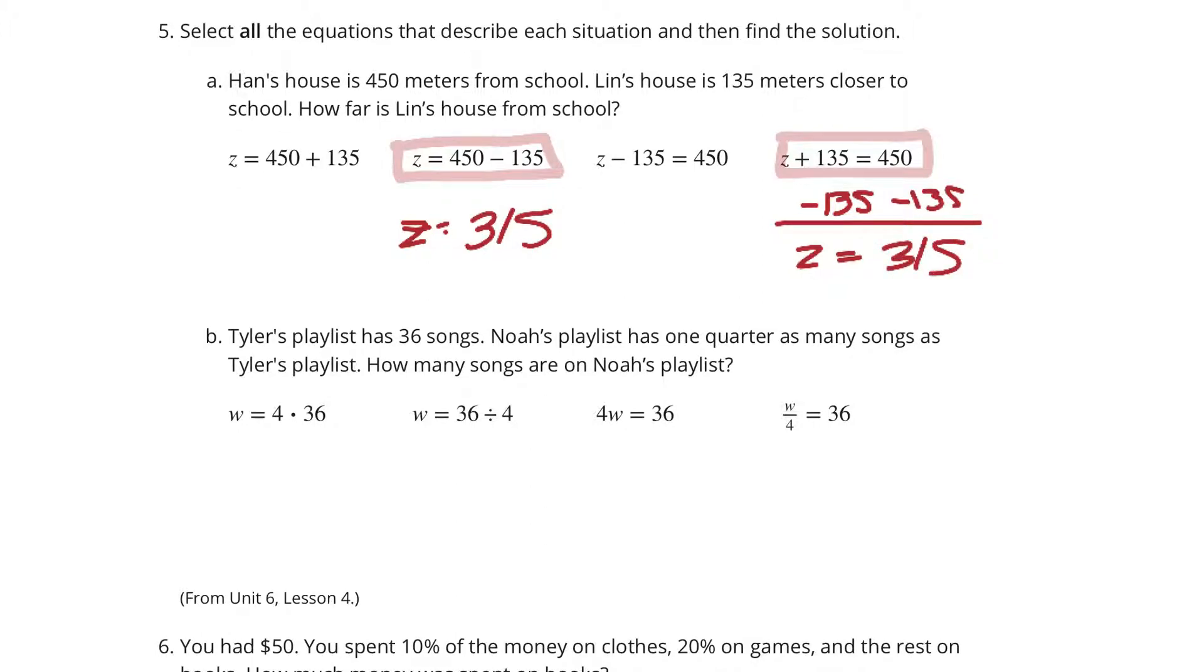Tyler's playlist has 36 songs. Noah's playlist has one-quarter or one-fourth as many songs as Tyler's playlist. How many songs are on Noah's playlist? We're looking at taking the 36 and dividing by 4. We can also look at 4w equals 36. And if we take 36 and divide by 4, we simply get w equals 9. And that's how we'll be solving this side. We'll be dividing by 4 on both sides to get w equals 9. So 9 songs on Noah's playlist. You multiply that by 4 and you get to Tyler's playlist of 36.